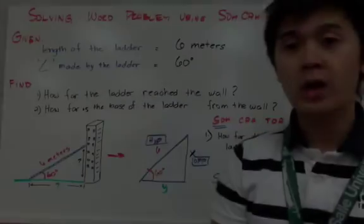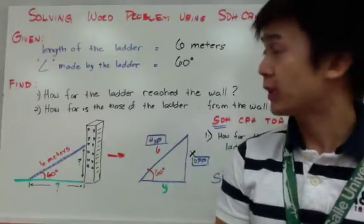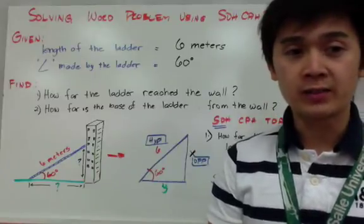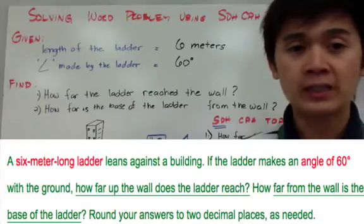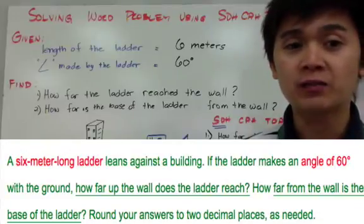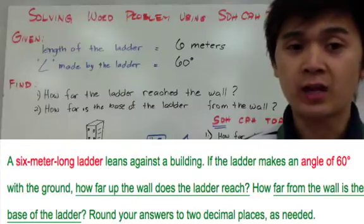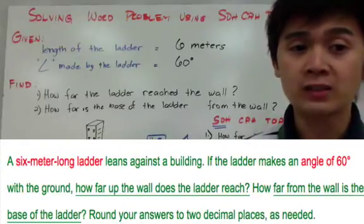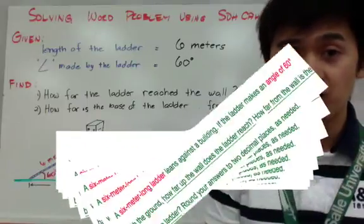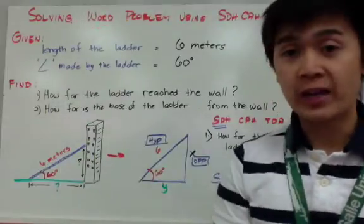Now we'll use SOH CAH TOA in solving word problems in trigonometry. The first word problem is: a 6 meter long ladder leans against a building. If the ladder makes an angle of 60 degrees with the ground, how far up the wall does the ladder reach and how far from the wall is the base of the ladder? We need to round our answer to two decimal places.